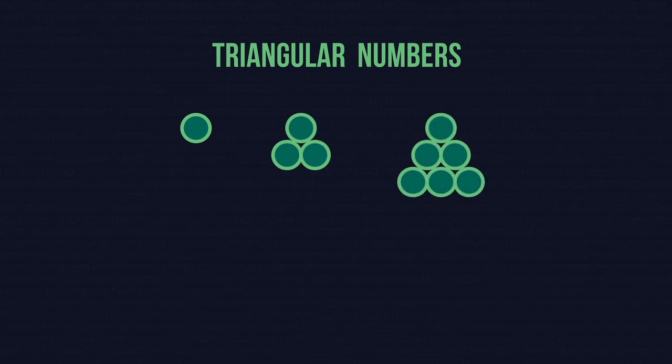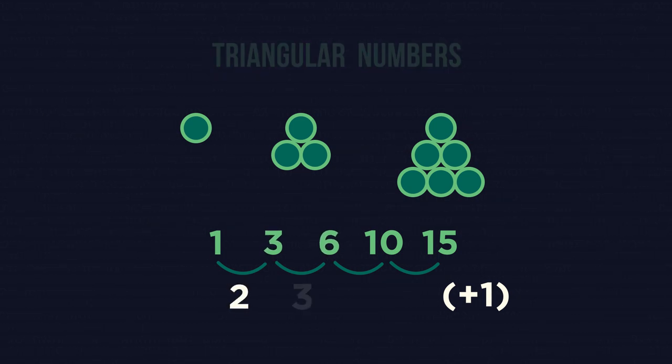Our final look is at triangular numbers. A triangular number is the number of objects you can arrange in a perfectly filled equilateral triangle. Another way to look at this is each time you increase the number, you increase the previous gap by 1. 1 to 3 has a gap of 2, 3 to 6 has a gap of 3, 6 to 10 has a gap of 4 and so on.